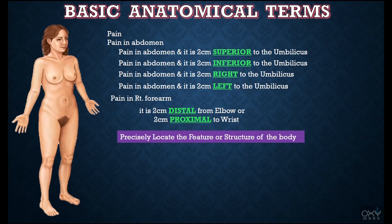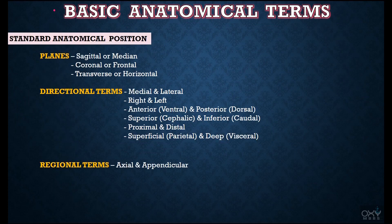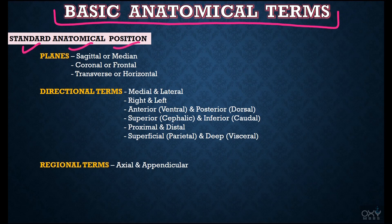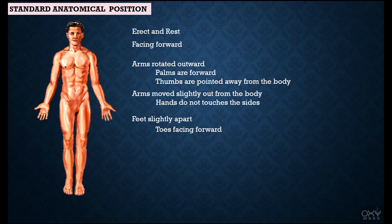Now I'm sure you have understood these basic anatomical terms. With the help of these terms we are able to precisely locate any feature or structure of the body. Under basic anatomical terms, first we will discuss what is standard anatomical position, because on the basis of this position the planes, the directional terms, the regional terms, and many more terms are defined.